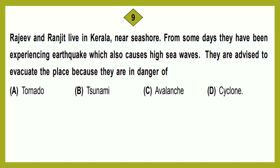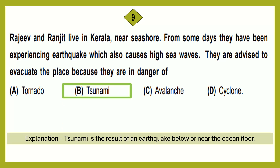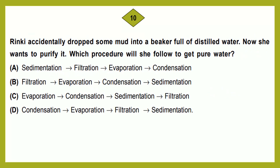Question number 9: Rajiv and Ranjith live in Kerala near the seashore. They have been experiencing earthquakes which also cause high sea waves. They are advised to evacuate because they are in danger of: option A: tornado; option B: tsunami; option C: avalanche; option D: cyclone. The correct answer is option B, tsunami. Tsunami is a result of an earthquake below or near the ocean floor.